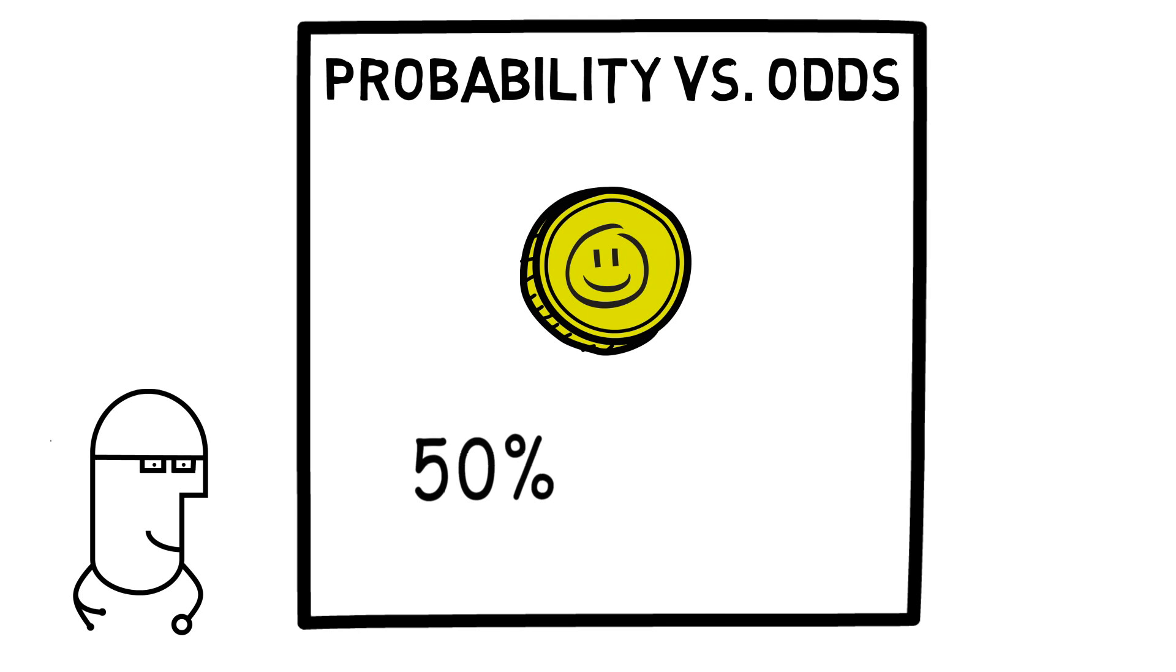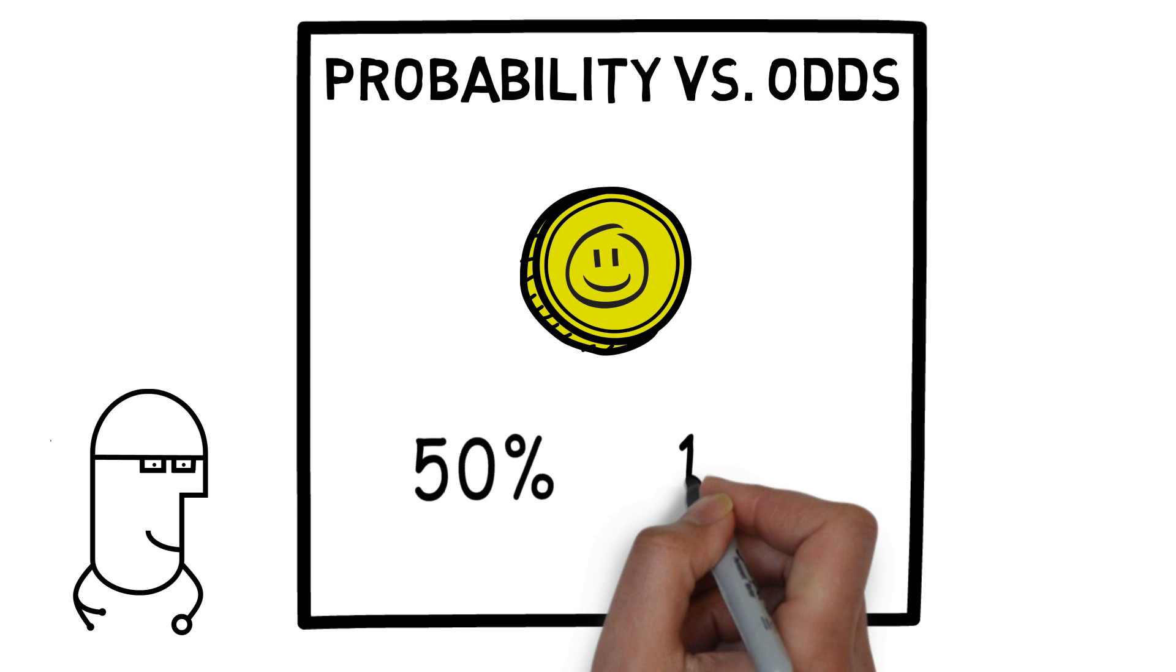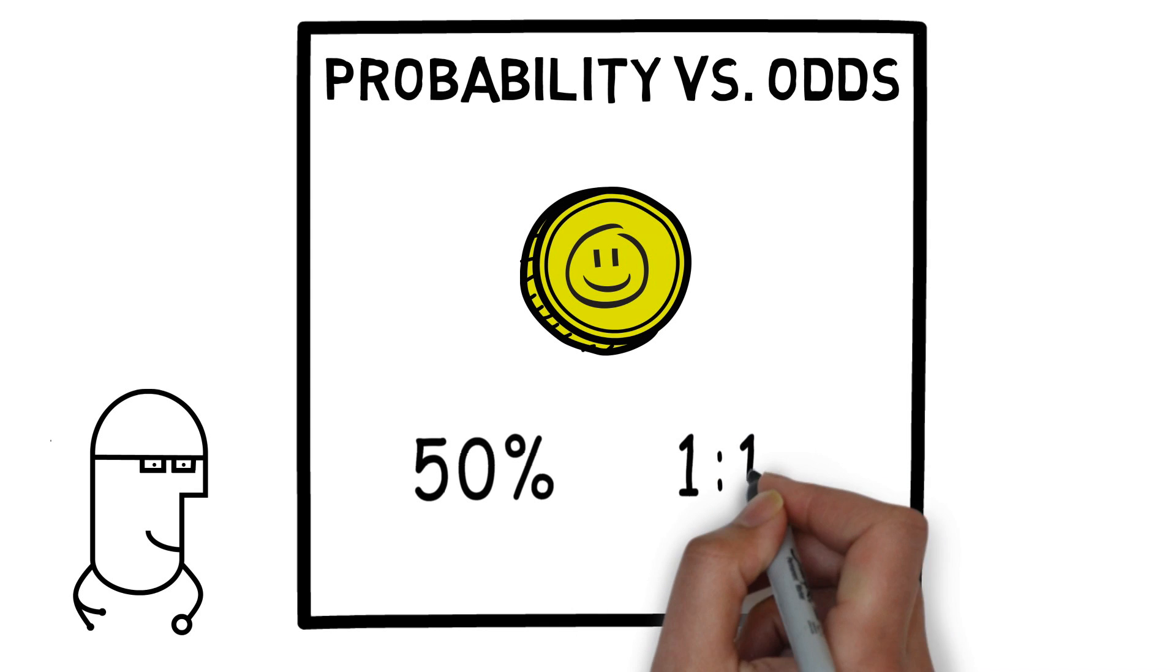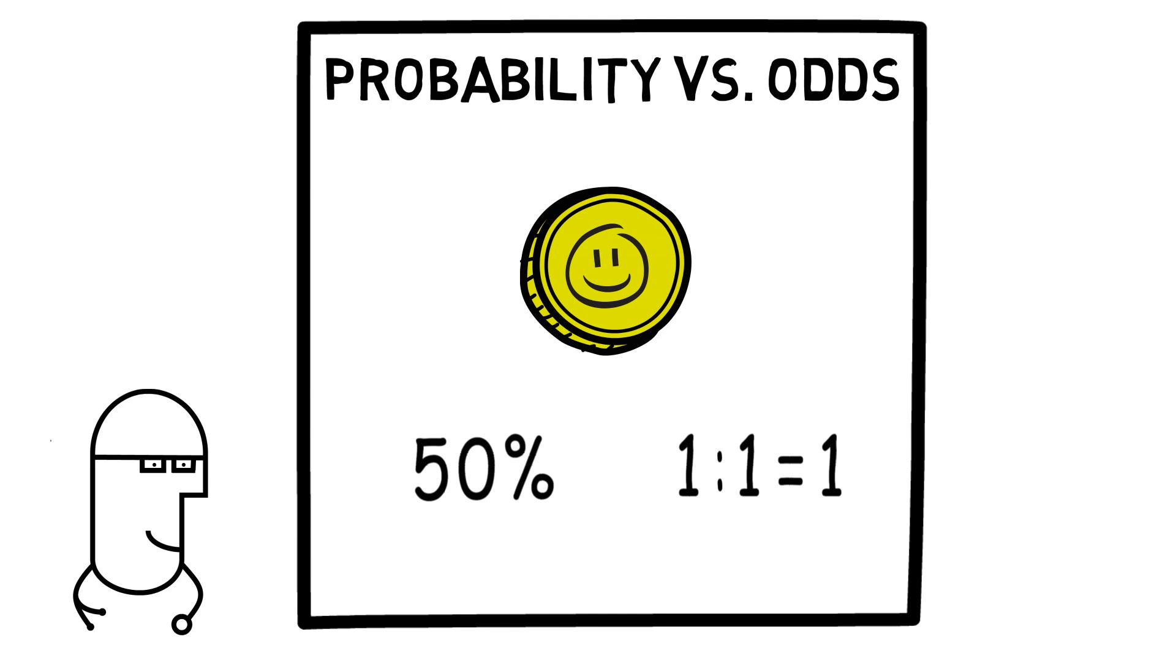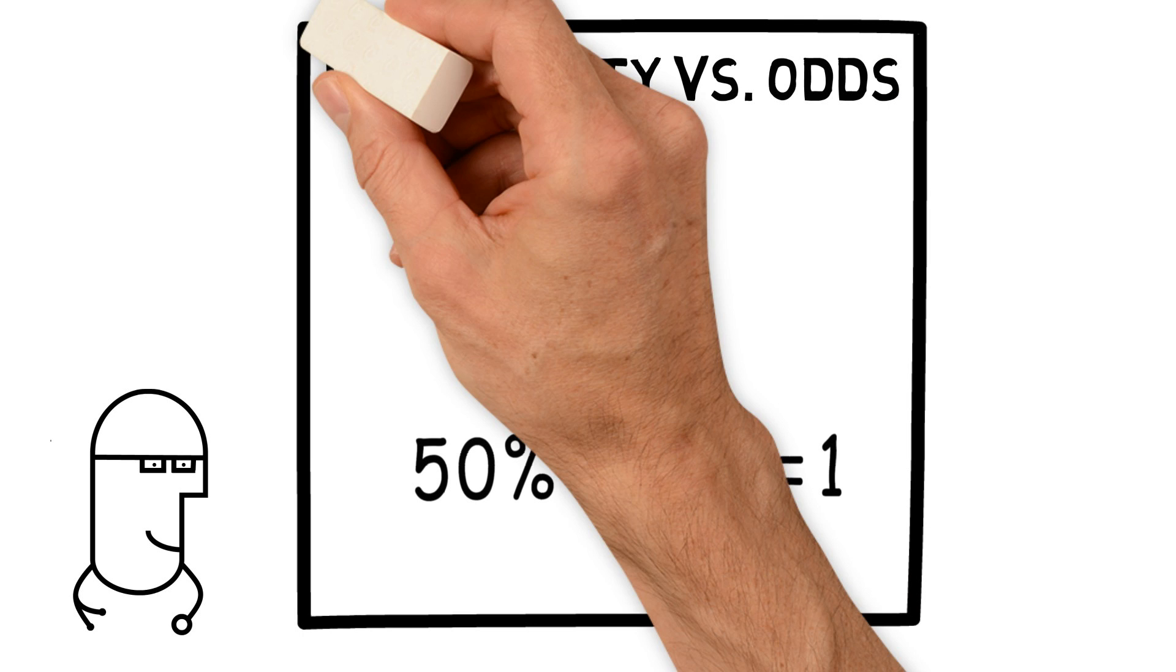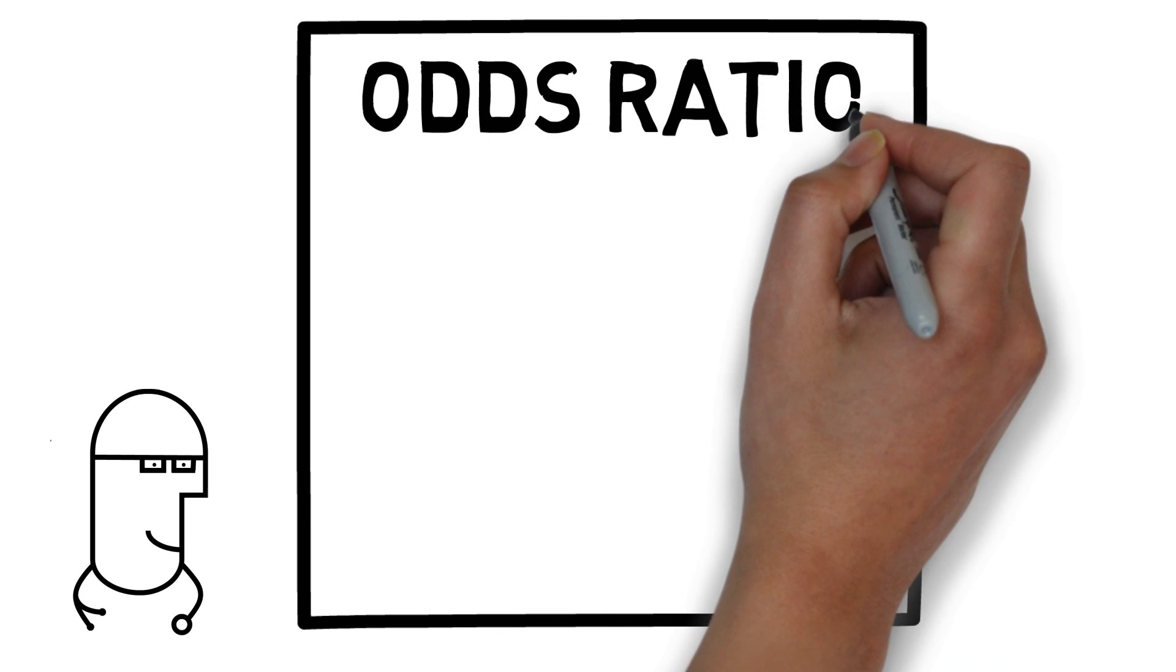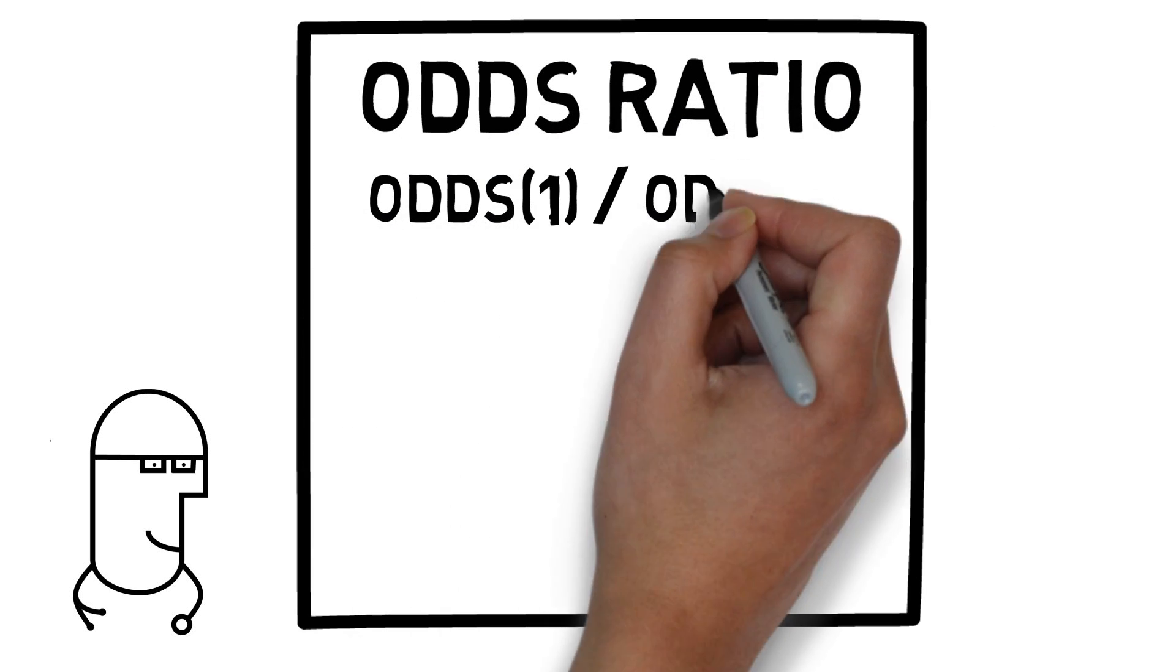1 over 2 equals 50%. When we calculate odds, we take the event rate, in this case 1 heads, and divide it by the non-event rate, which is 1 for tails. 1 divided by 1 is 1. The odds of getting heads when you flip a coin is 1. When we calculate odds ratio, all we're doing is taking the odds of something happening in one group and dividing it by the odds of something happening in another group.